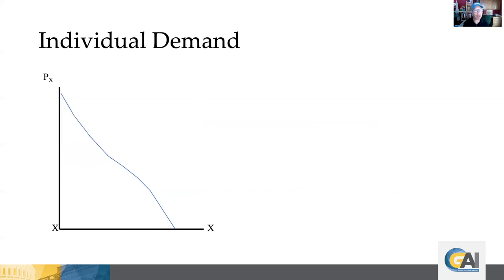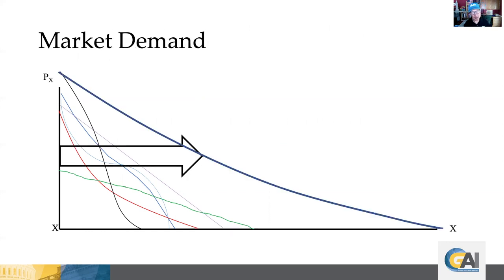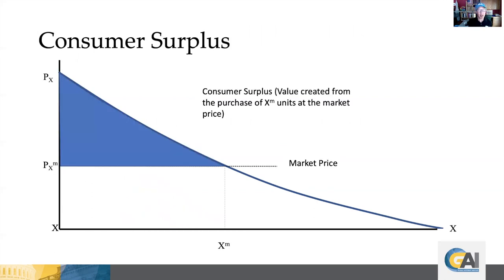We could also take an individual's demand. We could add a whole bunch of other individuals who also want to buy beer. And if we horizontally sum those individual demands, we can get a market demand. That is, that's the demand for beer from multiple individuals. If we take the market price and we look at the area above the market price, but below the market demand curve, that's consumer surplus. And that is the value created from the purchase of XM units at the market price. And that is the value created by these transactions that accrue to consumers.